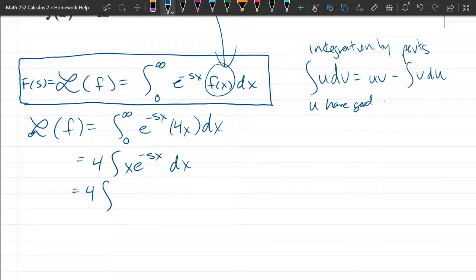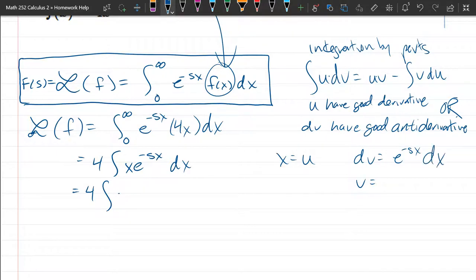a good derivative or dv to have a good antiderivative. Now the exponential: derivative of an exponential is an exponential and antiderivative is also an exponential, so that doesn't have a good or bad derivative or antiderivative, it's neutral. However, x has a very good derivative which is 1. Therefore we're going to let x equal u and dv is going to equal the rest: e to the negative sx. So we saw before antiderivative e to the negative sx.